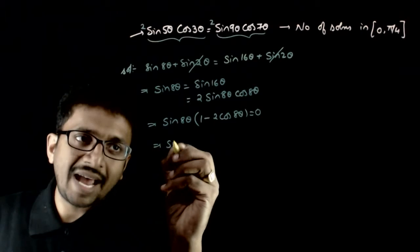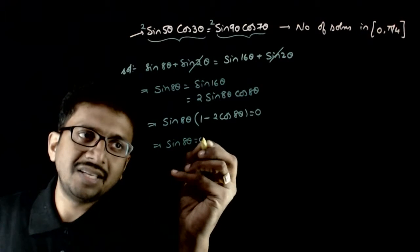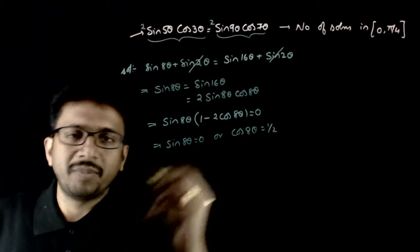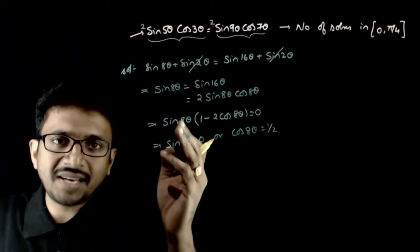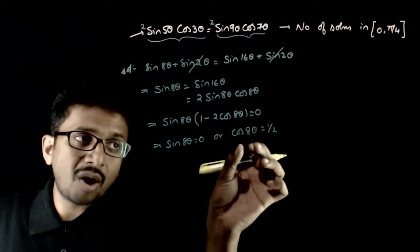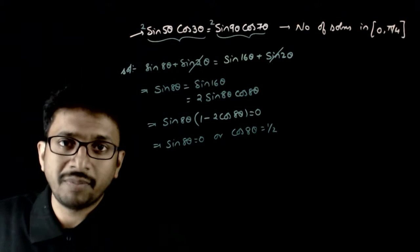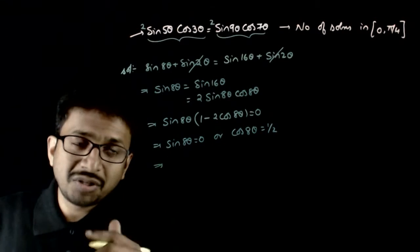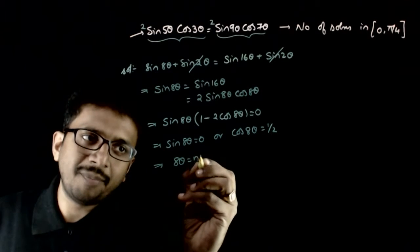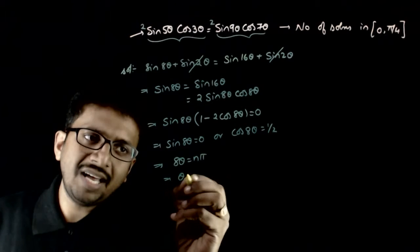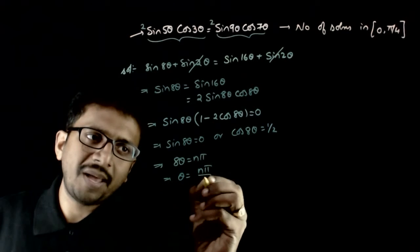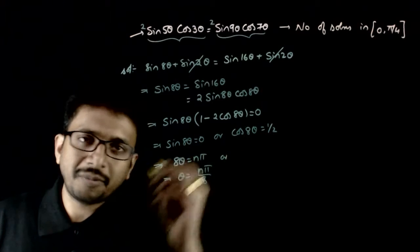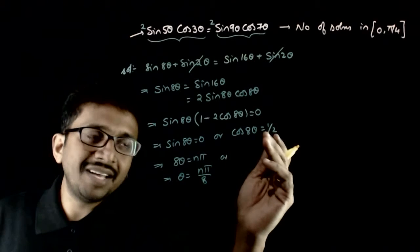We get sin8θ · (1 - 2cos8θ) = 0. This implies either sin8θ = 0 or cos8θ = 1/2. For sin8θ = 0, the solution is 8θ = nπ, i.e., θ = nπ/8.